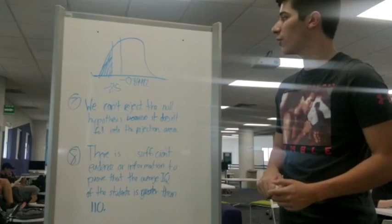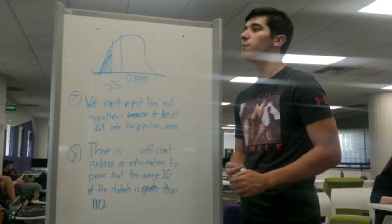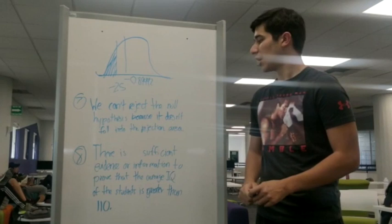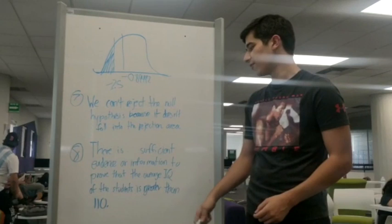We already found the critical T and the calculated T. We can now proceed to the solution. And we actually cannot reject the null hypothesis because it doesn't fall into the rejection area. And there is not sufficient evidence or information to prove that the average IQ of the students is greater than or equal to 110 in the school.